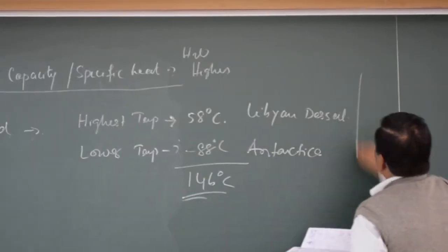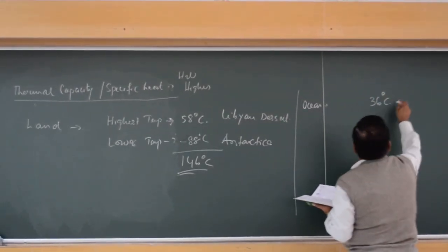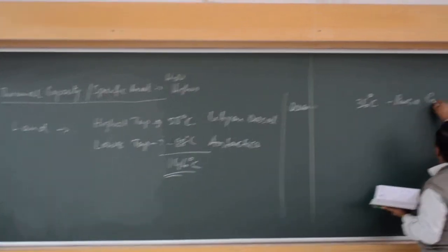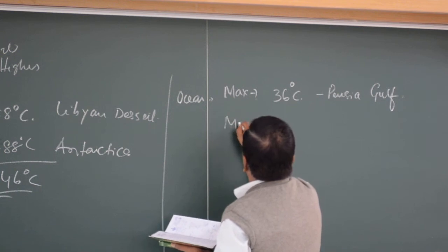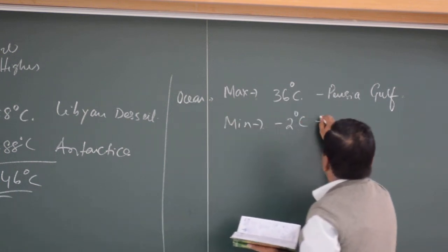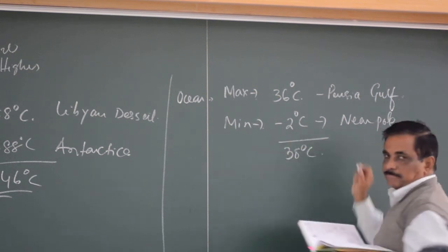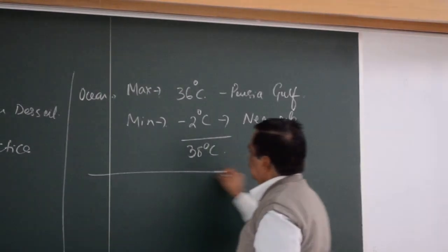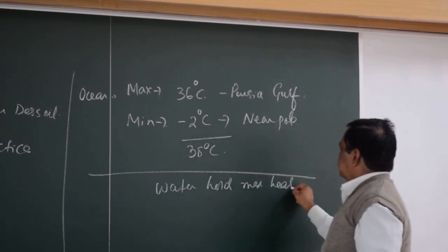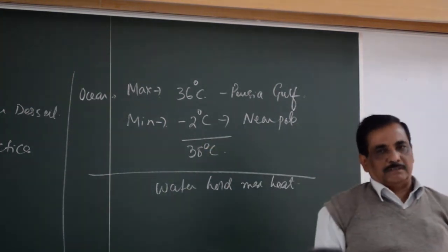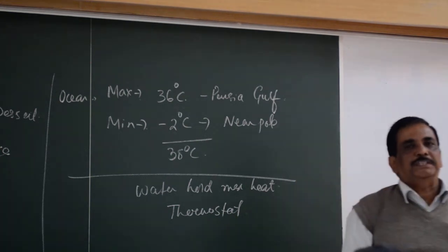In case of the ocean, 36°C is the maximum surface temperature of the ocean, and the minimum surface temperature is minus 2°C, that is in polar cold regions. So the difference is 38°C. This less difference occurs because water holds more heat, so variation does not take place much. That is why the ocean is called a thermostat — because it holds a lot of heat.